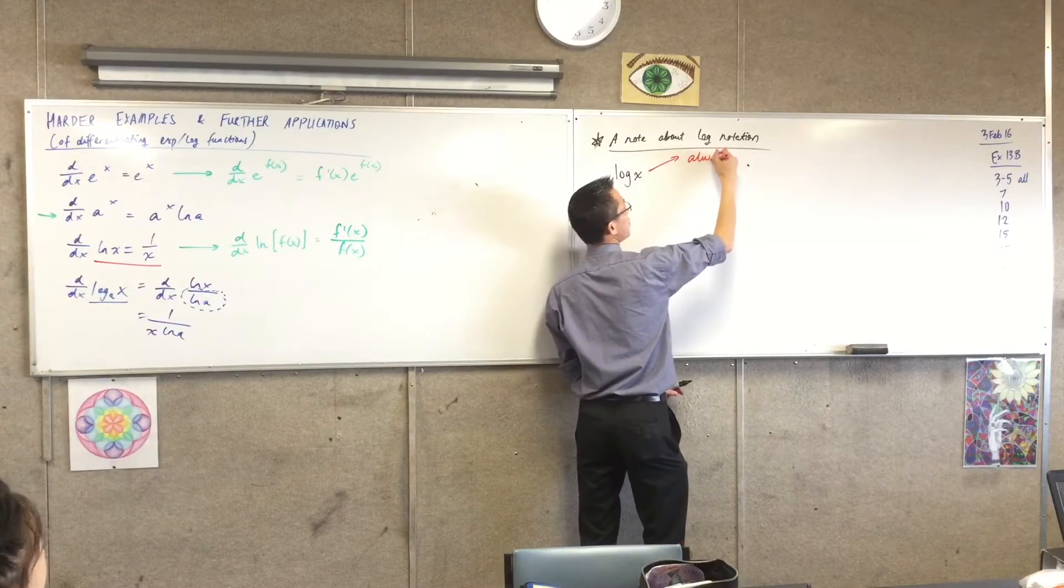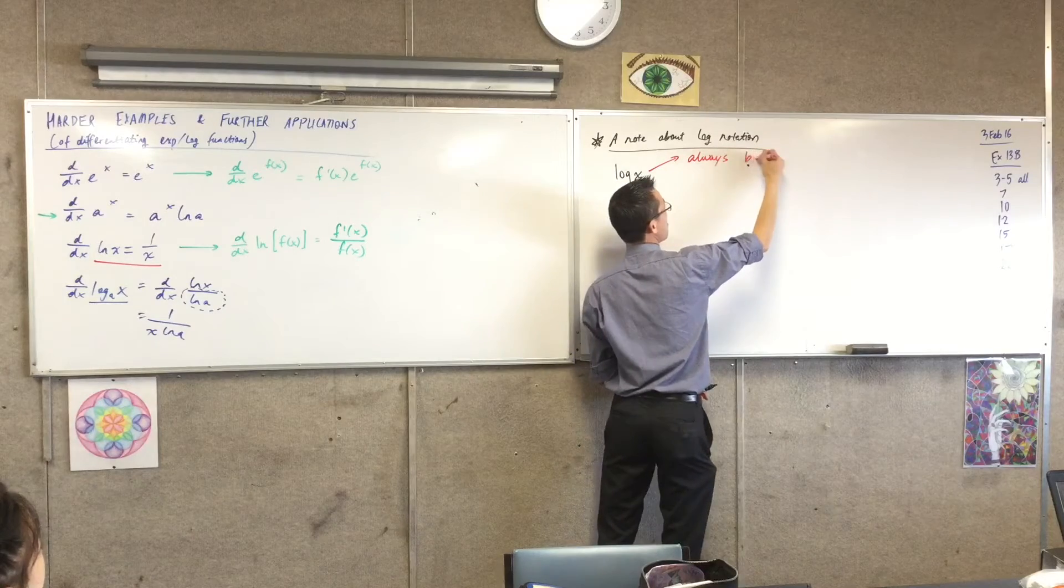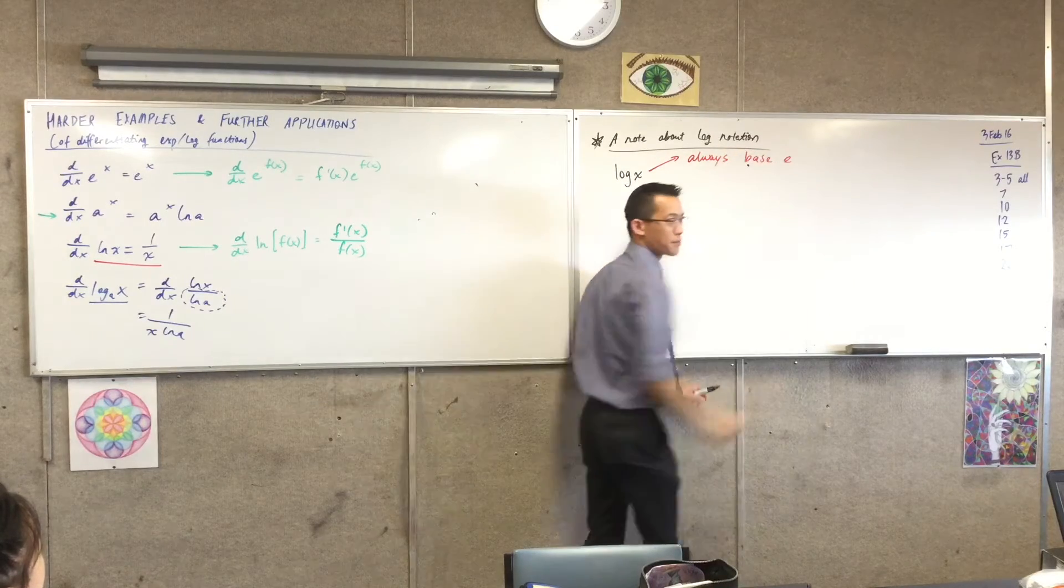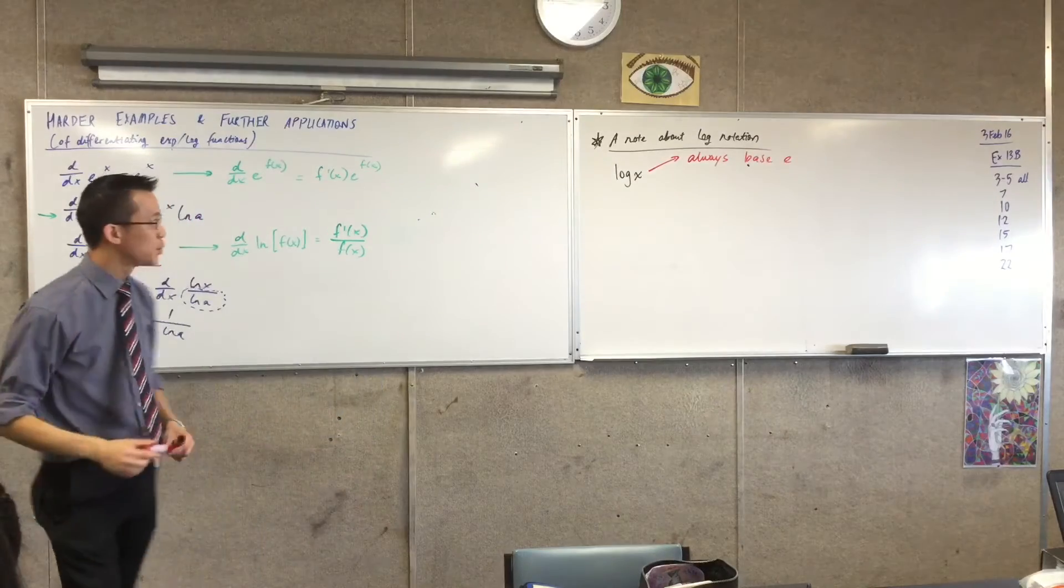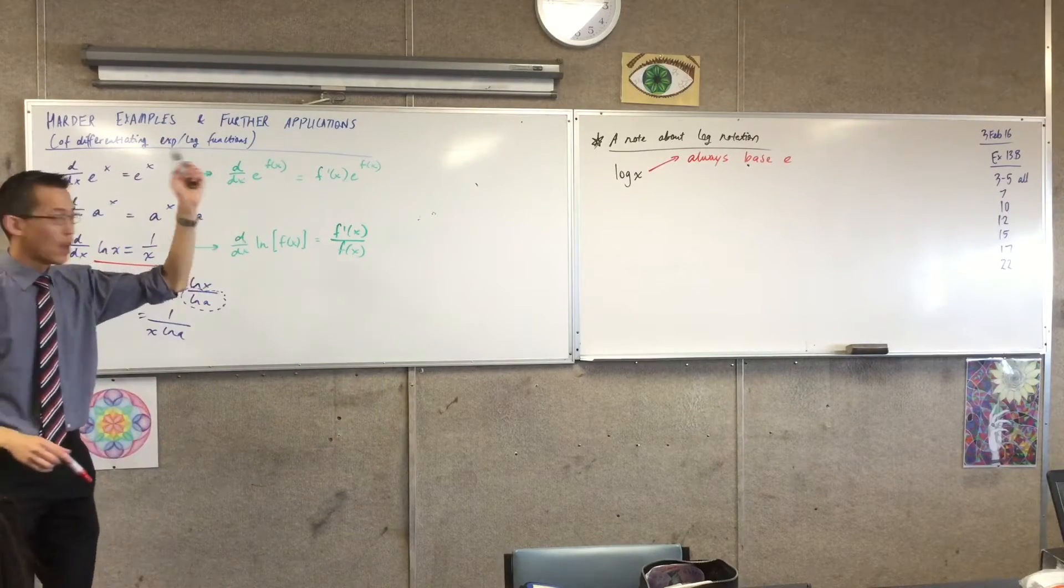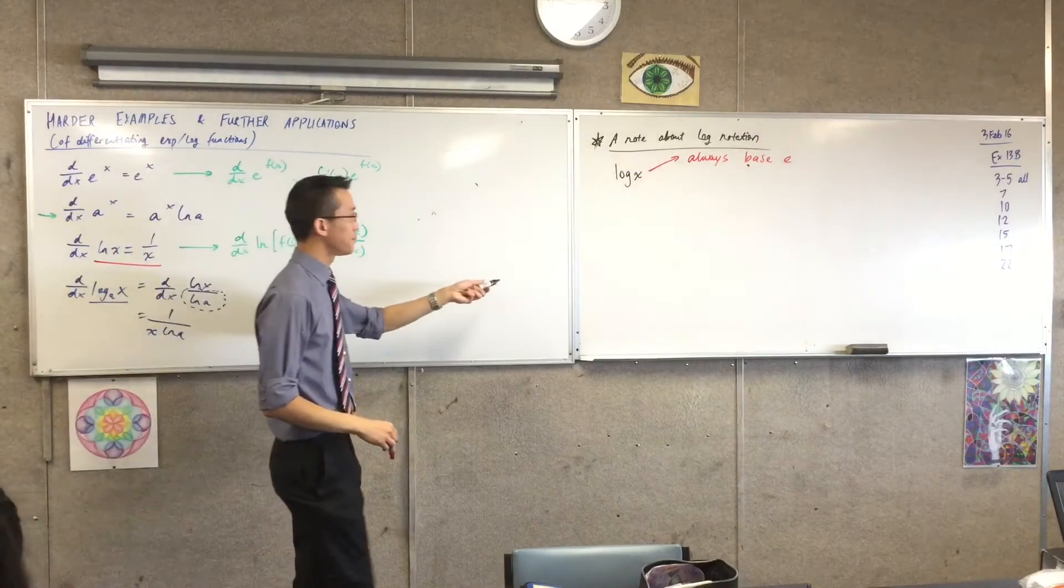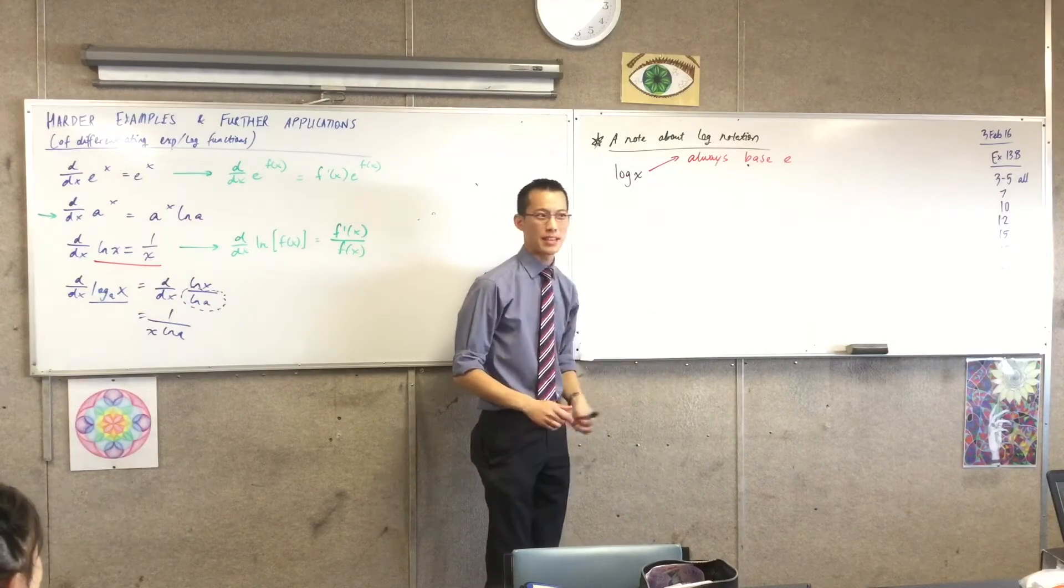you should always assume it has base e. If you see it in a test, if you see it in your textbook, you should always assume when there's no base implied, base e is what's being indicated.